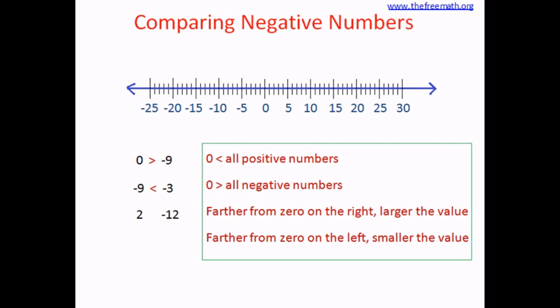The next pair is 2 and negative 12. This is quite easy — 2 is a positive number so it is greater than negative 12. On the number line, 2 is on the right-hand side and negative 12 is on the left-hand side, so 2 is greater than negative 12. The next pair is 2 and 12 — both positive numbers. Two is smaller than 12.